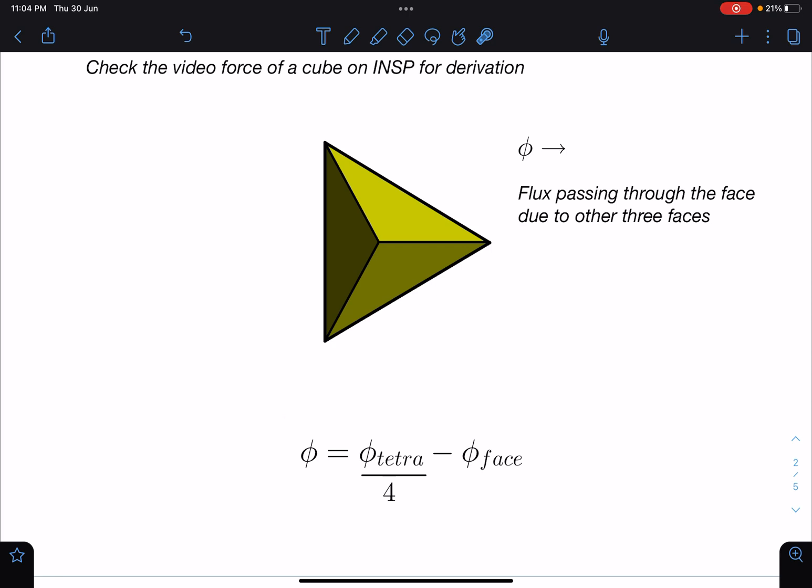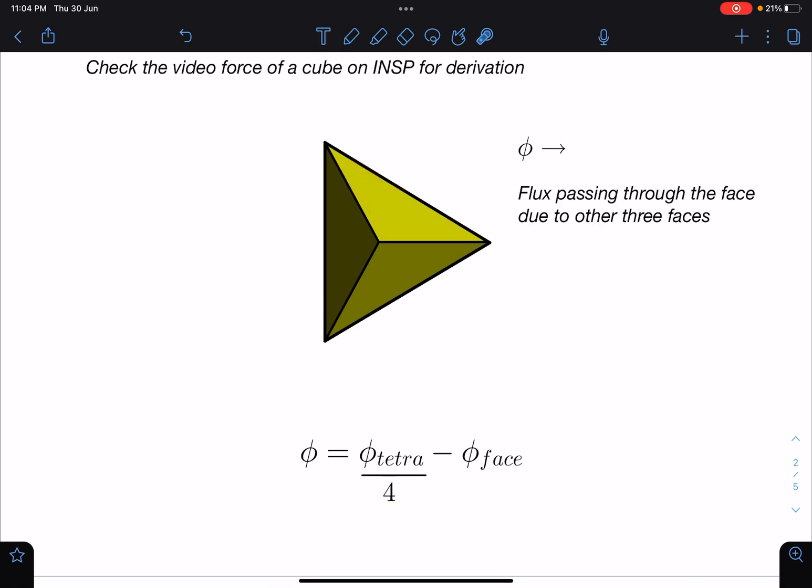We have to calculate flux due to remaining 3 passing through this. So total which is passing through this part minus for the face itself, that is going to give us this value. I hope this point is clear to you.